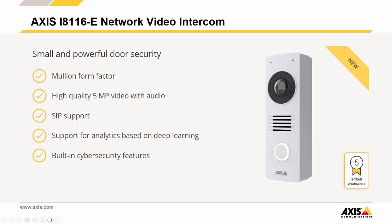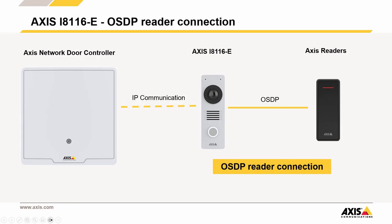When installing Axis Control into Axis Camera Station, the new Axis i8116 intercom has a feature that is of interest. You can now connect an Axis Control reader directly via OSDP. The intercom can then be added to a door controller as an IP reader when configuring your Axis Control solution.